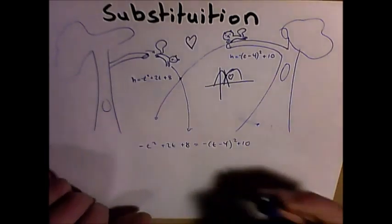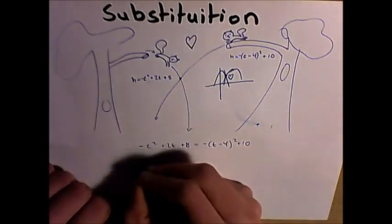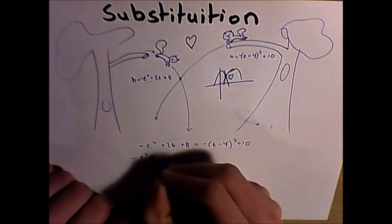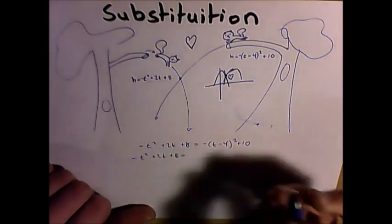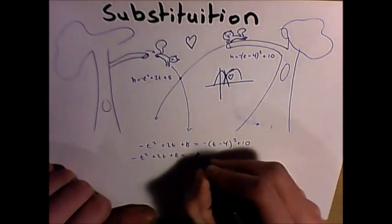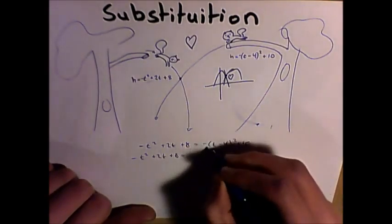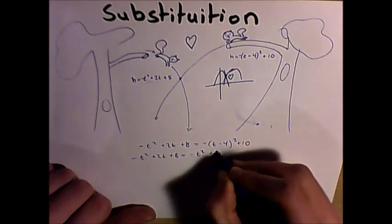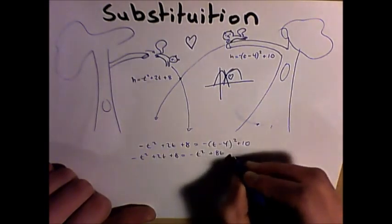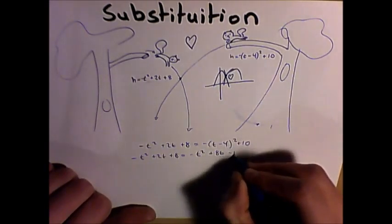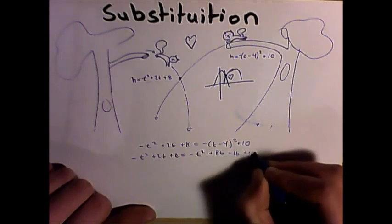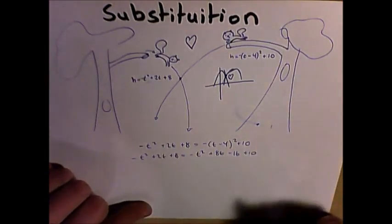So after foiling this out, we find that we have negative t squared plus 2t plus 8 equals negative t squared plus 8t minus 16 plus 10. And now we'll simplify it.